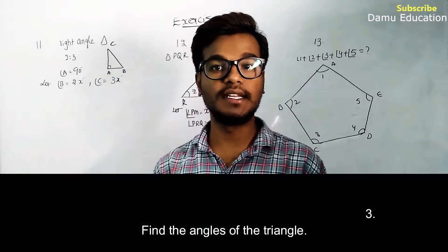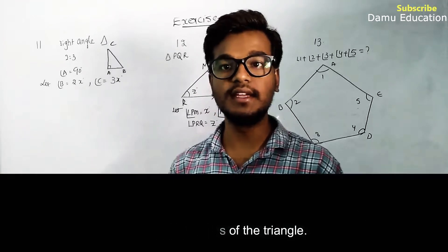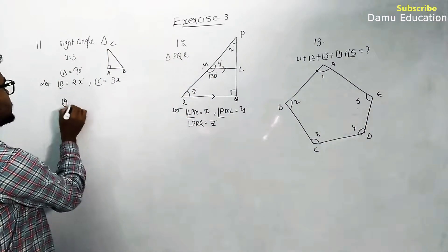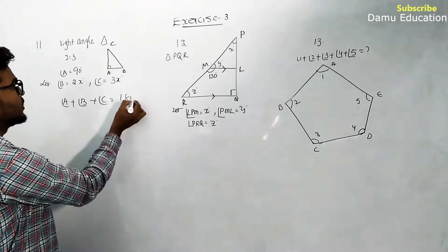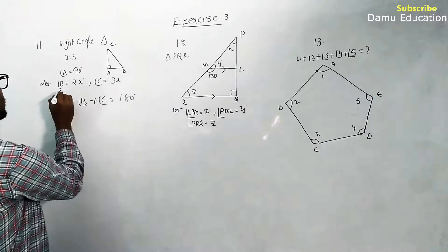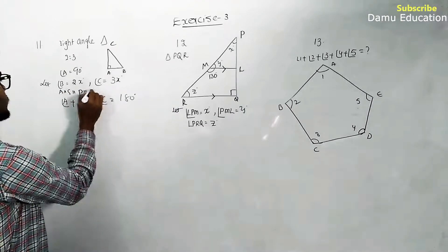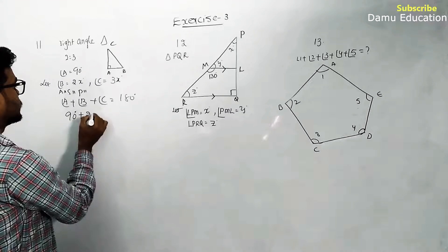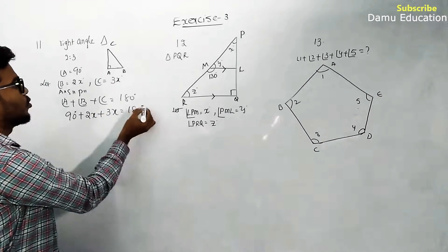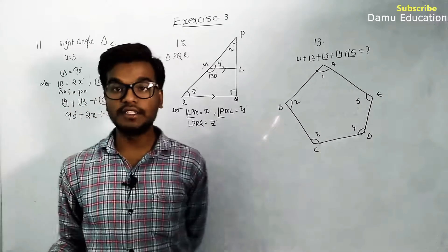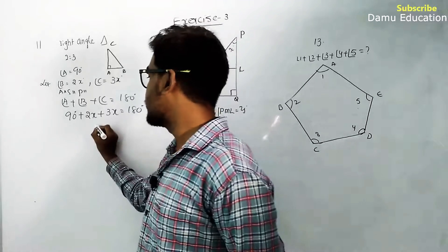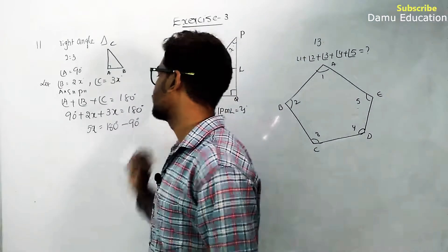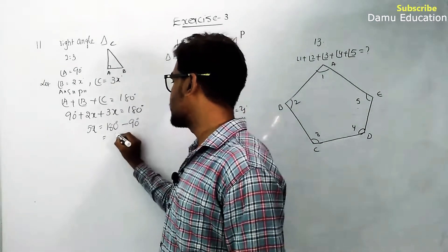Using the angle sum property of triangle ABC, angle A plus angle B plus angle C equals 180 degrees. Substituting: 90 plus 2x plus 3x equals 180 degrees. So 5x equals 180 minus 90, which gives 5x equals 90 degrees.